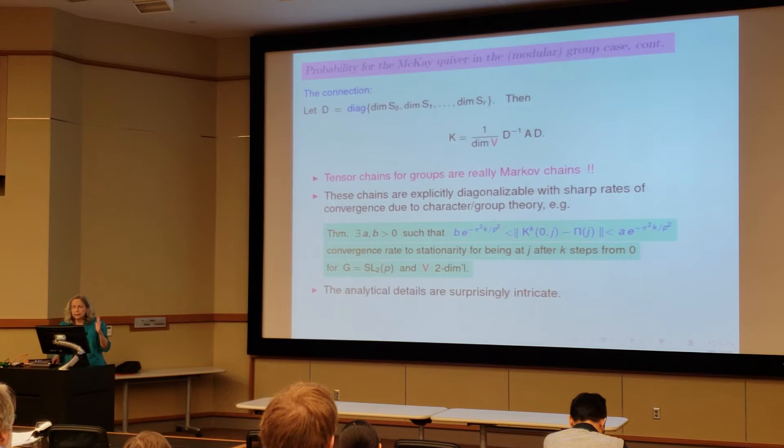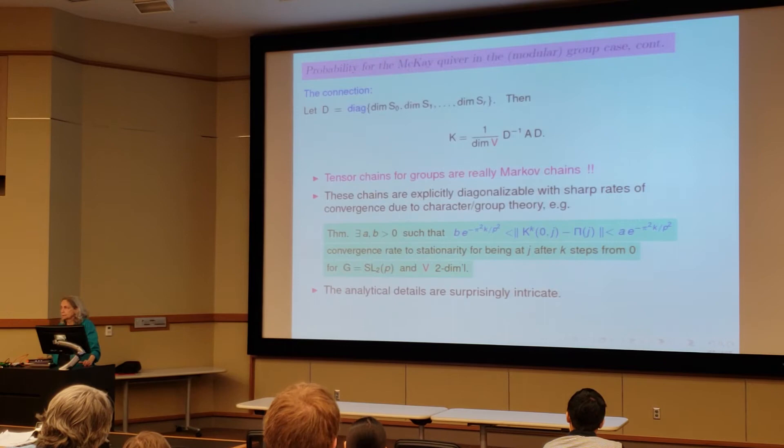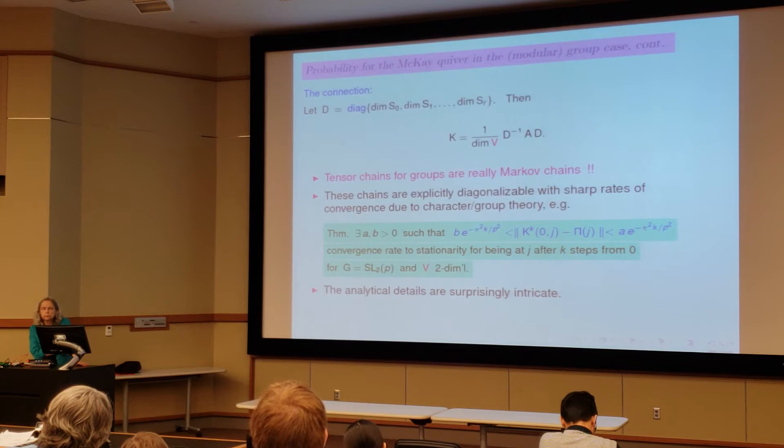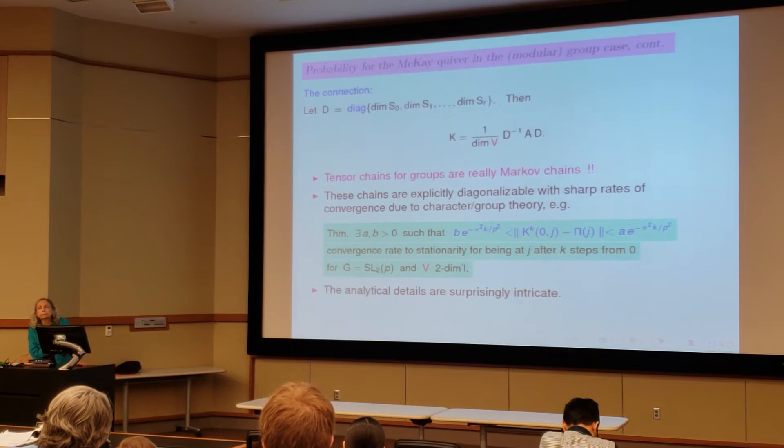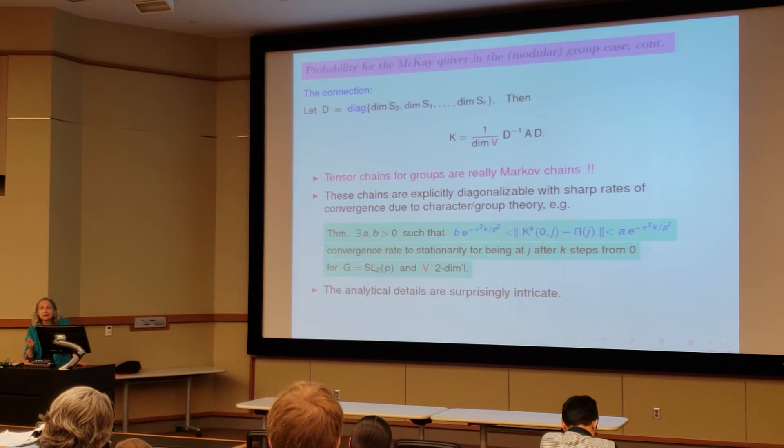And the analytic details to get us to this are surprising, even with all that information about the eigenvalues. So we know results like this for SL2P squared, SL2, SL3P. There are also results for tensoring with the Steinberg module, which Percy really likes a lot because you move very rapidly a large distance. So you get a bigger bang for your buck in the tensors with Steinberg module.